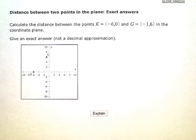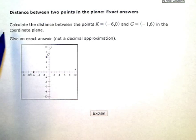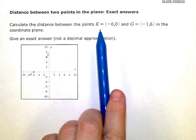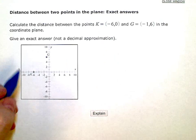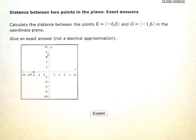Distance between two points in the plane, exact answers. Calculate the distance between the points K, which we can see here, is at negative 6, 0, and G, which is at negative 1, 6.